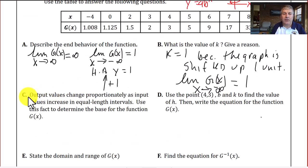Question C says output values change proportionally as input values increase in equal length intervals. Use this fact to determine the base of the function. So we do have some equal intervals here from like 2 to 3 and 3 to 4, equal x inputs. Well, what's happening to y? It looks like this is an increase of ½, and then an increase of 1, then an increase of 2, then an increase of 4, then an increase of 8, and then an increase of 16.